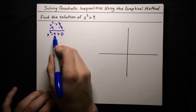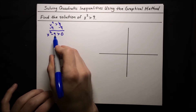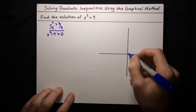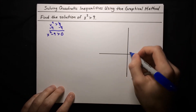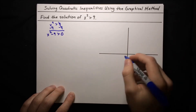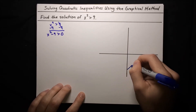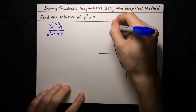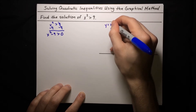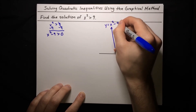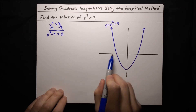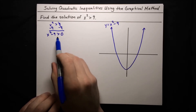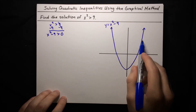Now this x squared minus 9 part we can think about as a graph. Let's graph x squared minus 9. We know the graph of x squared is a parabola that goes up like this, and the minus 9 is just shifting it down a bit. That is y equals x squared minus 9. And on this graph, we are interested in the parts where y is greater than 0.